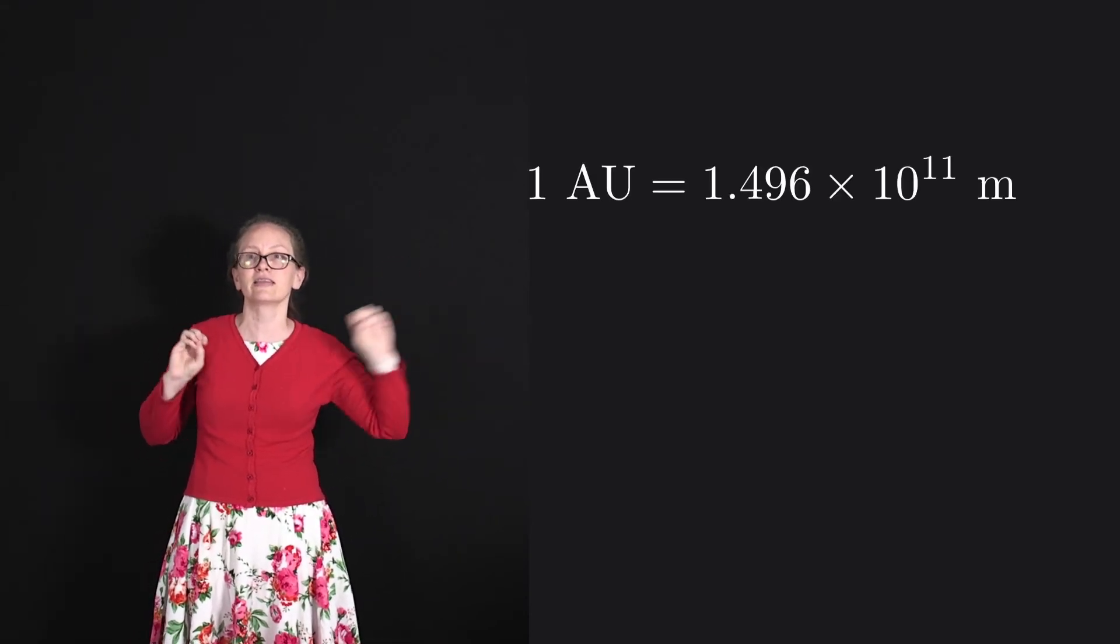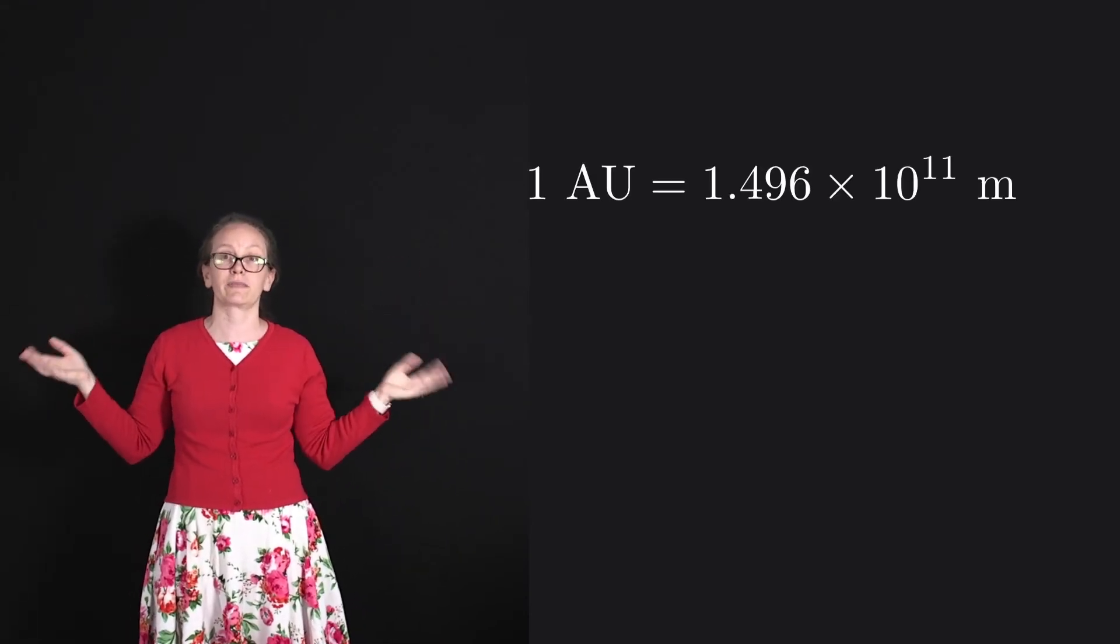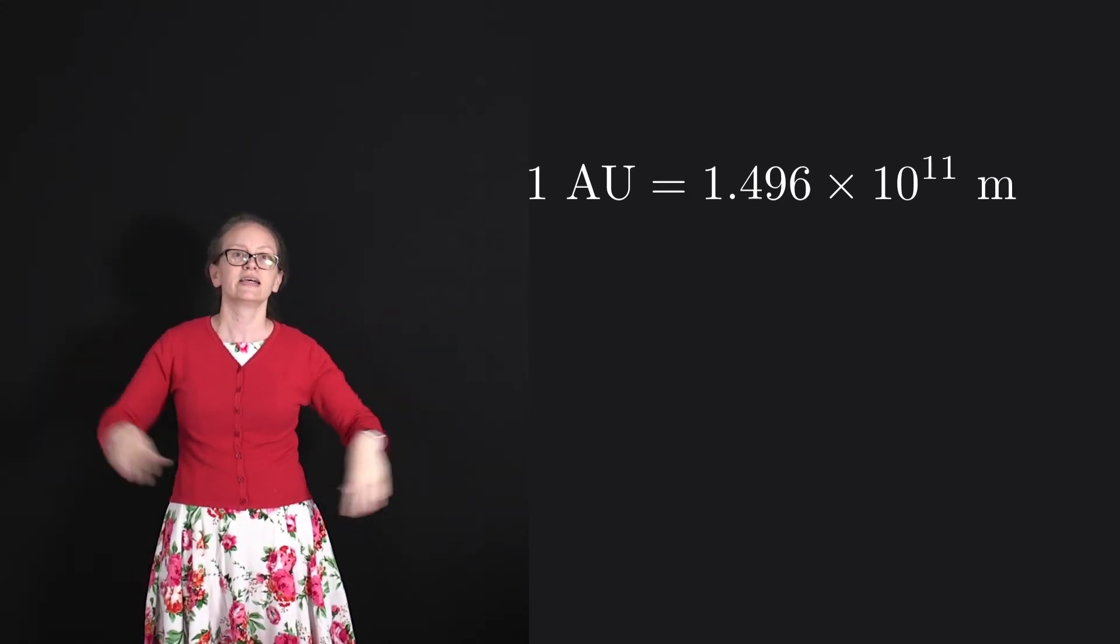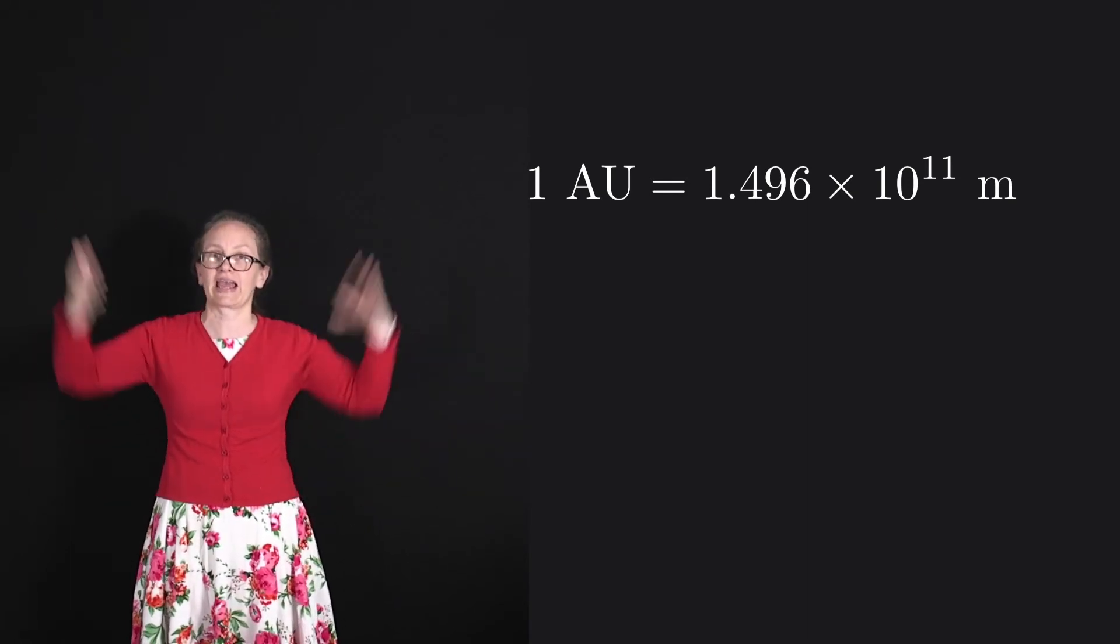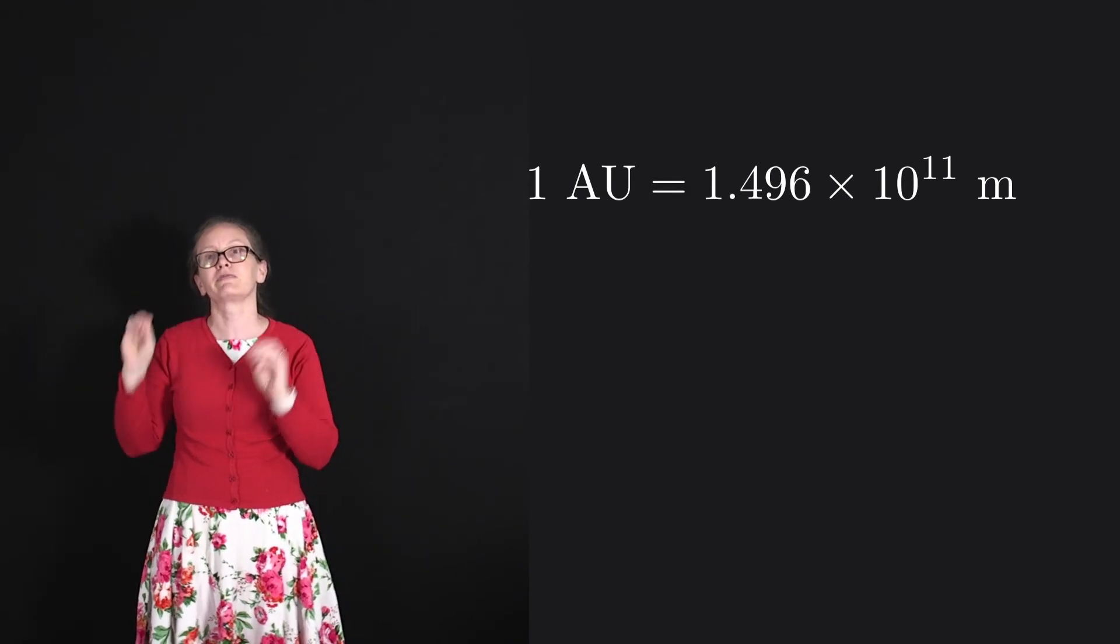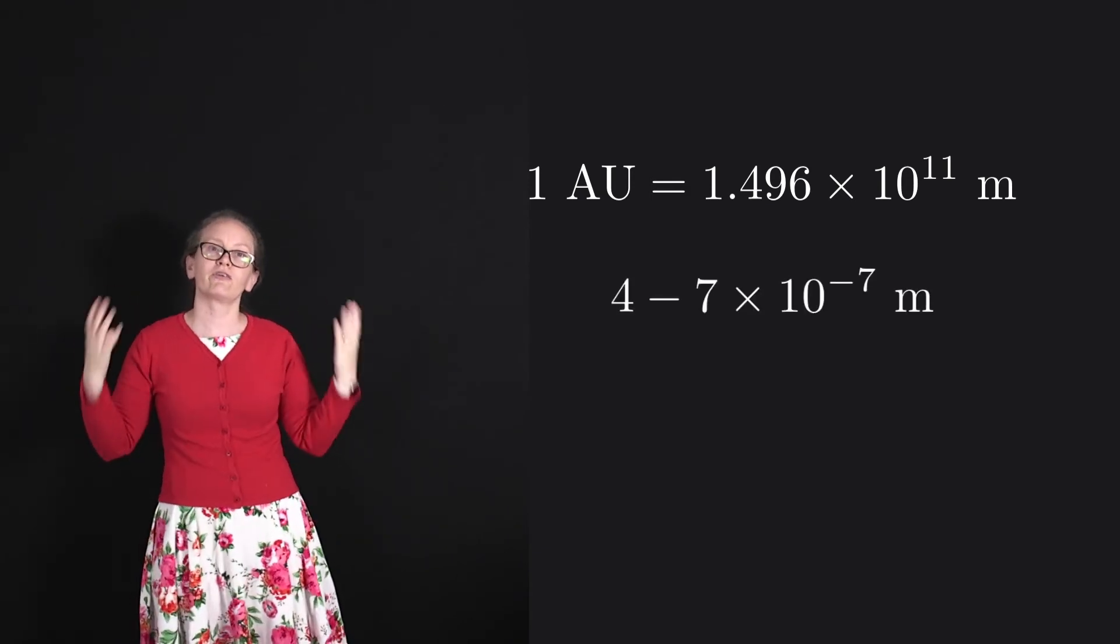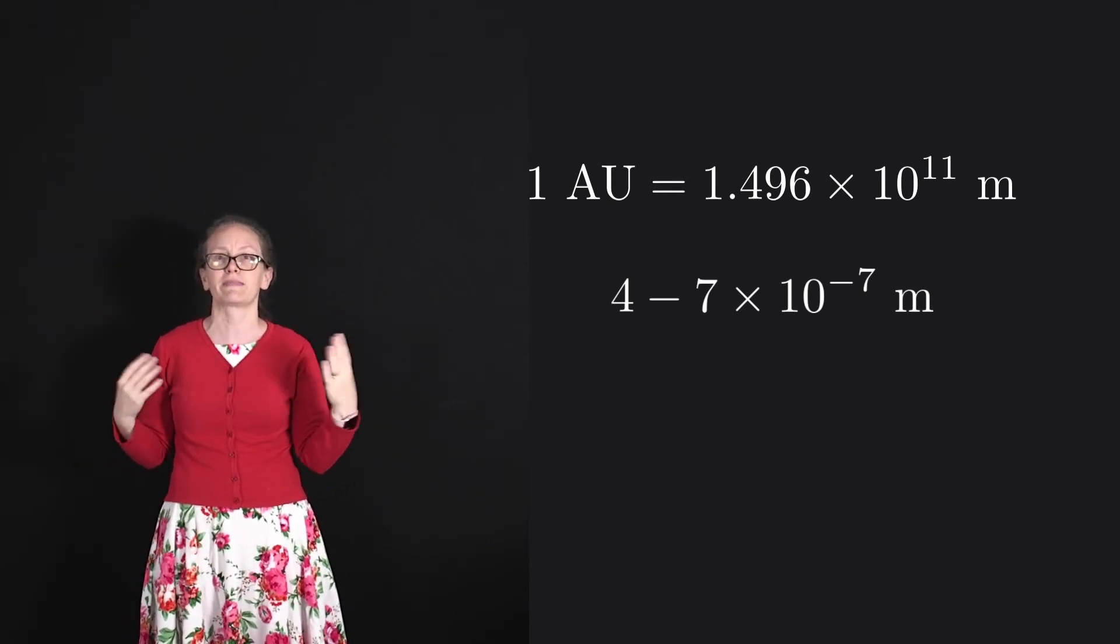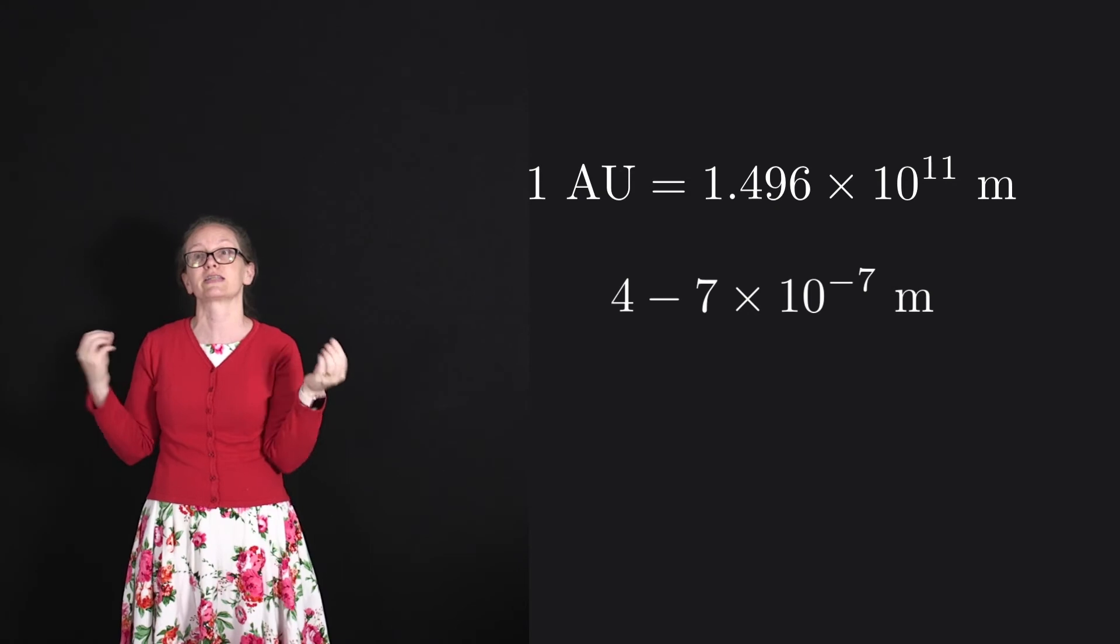When we're dealing with problems in physics, sometimes we're dealing with really large scales. For example, the distance between the earth and the sun is one astronomical unit, which is equal to 1.496 times 10 to the 11 meters. And that's not even the biggest we go. Sometimes we're considering galaxies, which are really far apart and really large. And sometimes we're dealing with really small properties. For example, sometimes we're considering the wavelength of light, and the wavelength of light is between about 4 and 7 times 10 to the minus 7 meters.